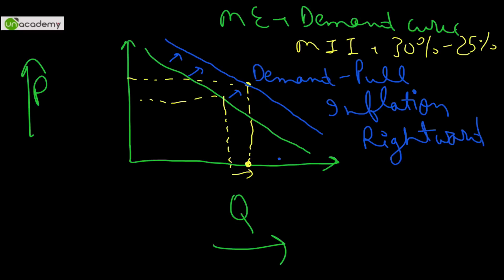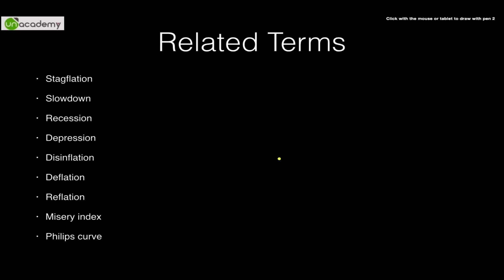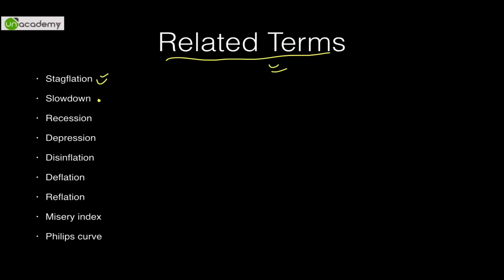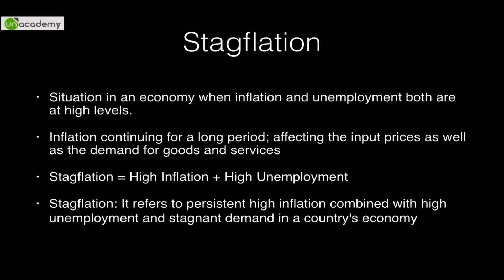Some related terms you will encounter a lot include stagflation, slowdown, recession, depression, disinflation, deflation, reflation, misery index, and the Phillips curve. We will tackle each one in this introductory video, starting with stagflation.